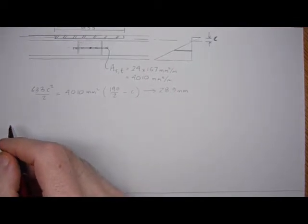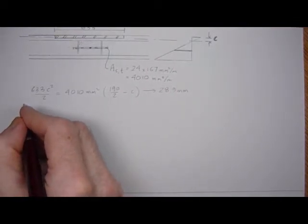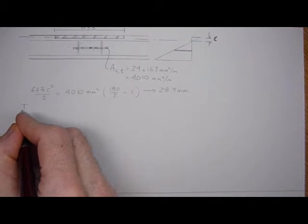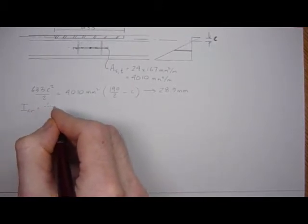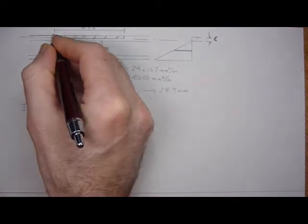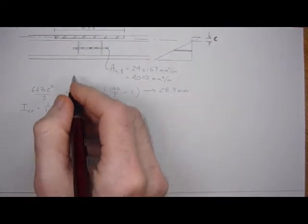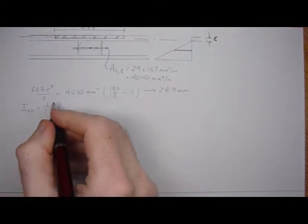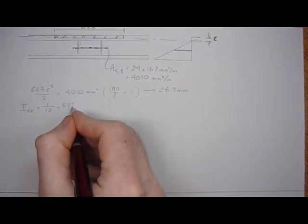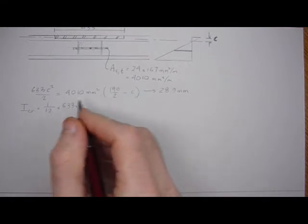And now we can calculate the I effective value, or the I cracked, sorry. I cracked is going to be 1/12 times 633, we're taking inertia about the neutral axis for the cracked section, 633 times C cubed, 28.9.